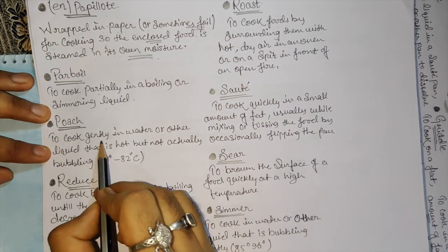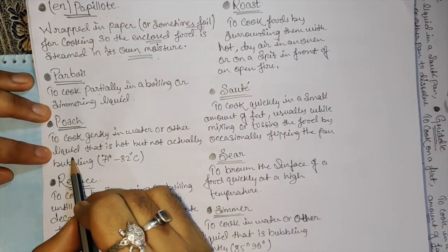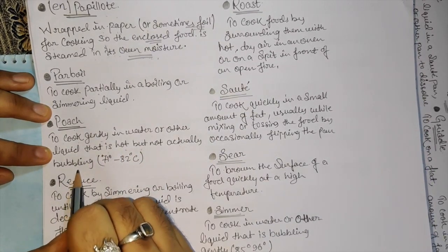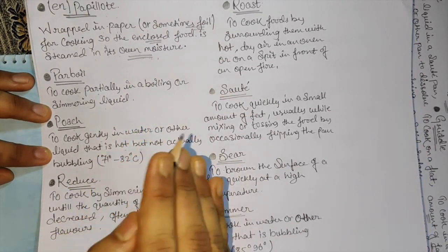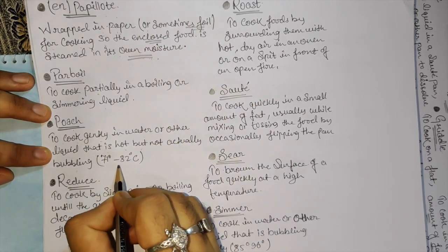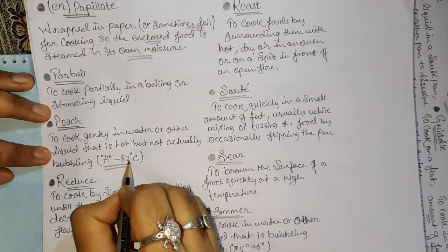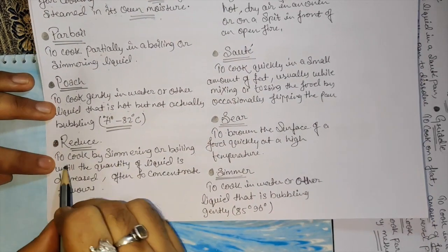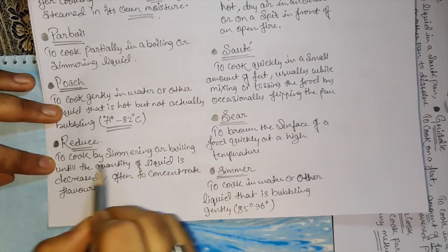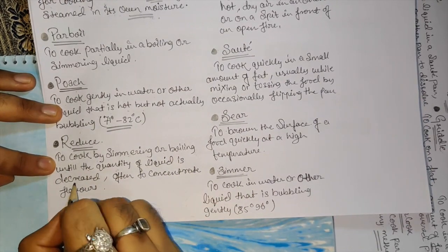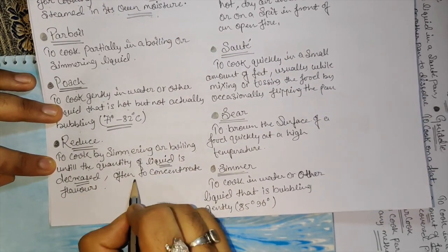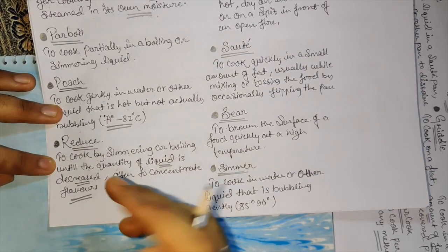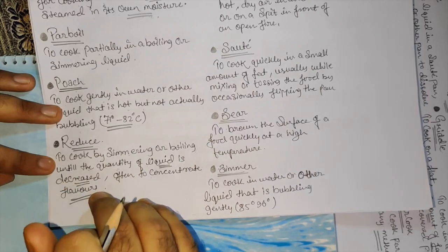Poach - to cook gently in water or other liquid that is hot but not actually bubbling, less than boiling temperature, 71 to 82 versus 100 degrees. Reduce - to cook by simmering or boiling until quantity of liquid is decreased, often to concentrate the flavor.